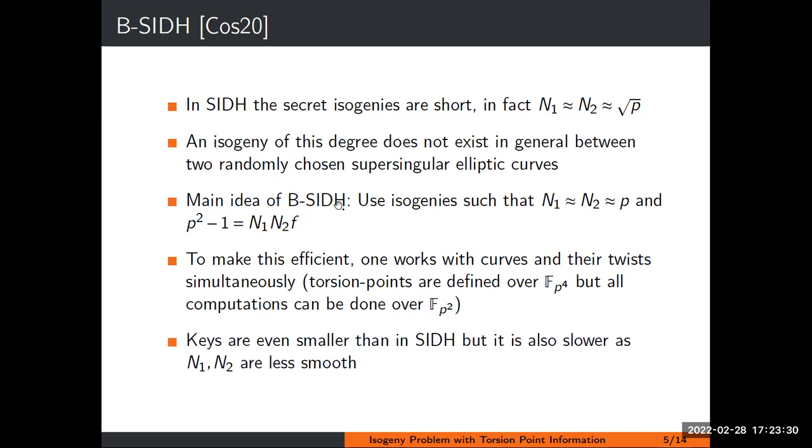However, finding parameters for B-SIDH is much harder than for SIDH. You can no longer expect N1 and N2 to be powers of two and three. You can make them smooth numbers, but it's a lot of work, and they're much less smooth than in SIDH. So it's slower than SIDH, but it has some nice features. For example, keys are smaller than SIDH.